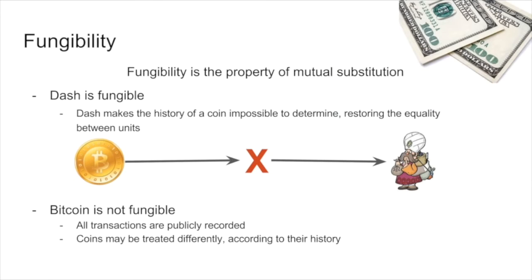Fungibility is another area where Dash has greatly improved upon the cryptographic technology. In Dash, from time to time the history is actually removed from all of the coins on the network, which allows every coin to be equal to every other coin. If you walk into a merchant and give them a hundred dollar bill, that bill is worth exactly a hundred dollars. But if you give them a Bitcoin, that Bitcoin might have come from recent illegal activity, and its value might fall over time because no one wants to be associated with illegal activities. This is something no one should have to worry about when using a currency, so we believe fungibility is something the currency itself should take care of — we've invented a system that is very cost-efficient to remove the history from coins.